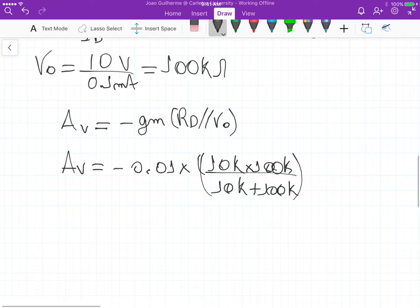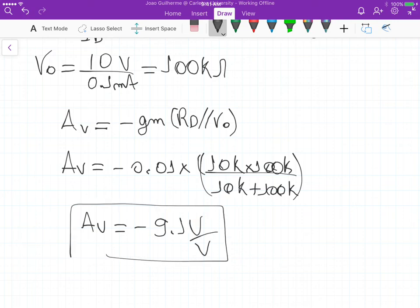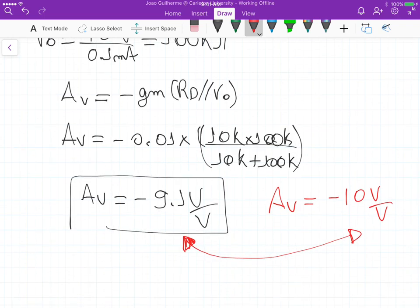This gives us a gain of minus 9.1 volts per volt. If you remember the previous AV we calculated ignoring the channel modulation effect, it was minus 10 volts per volt. So considering the channel modulation effect, we are basically decreasing the voltage gain for this particular amplifier.